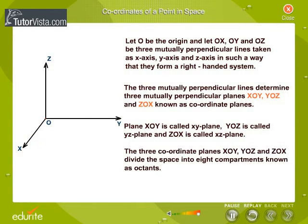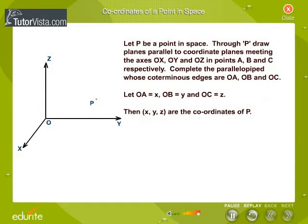The three coordinate planes XOY, YOZ and ZOX divide the space into eight compartments known as octants. Let P be a point in space.